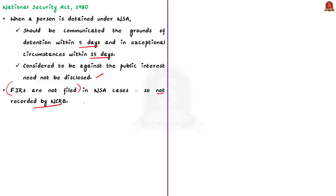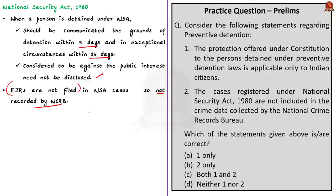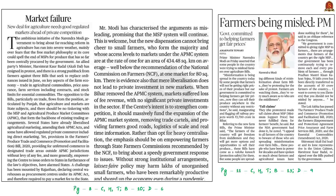To summarize this discussion, we saw about the two types of detention, the constitutional provisions available for detention under Article 22, the history of preventive detention since the colonial era, and the National Security Act of 1980. Now have a look at this practice question before we move on to the next news article.